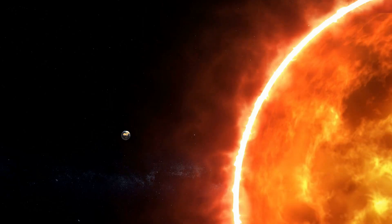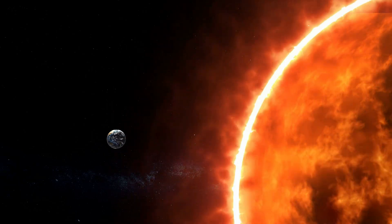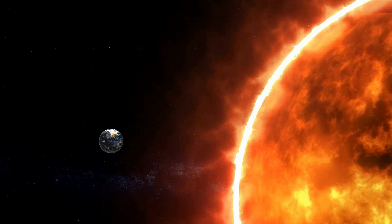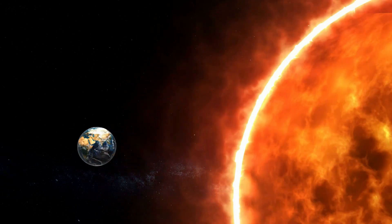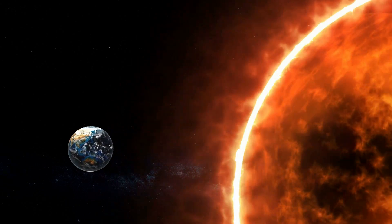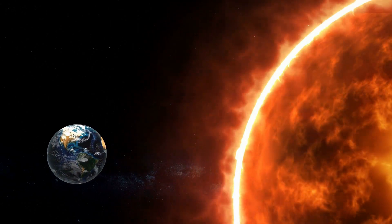The Sun continuously releases a stream of charged particles, called the solar wind, which travels through the solar system at high speeds. This solar wind, along with solar flares and CMEs, can impact space weather, affecting satellites, spacecraft, and astronauts in space.